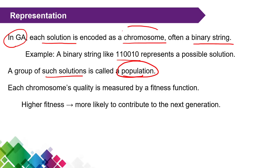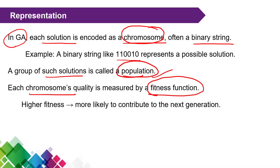A group of such solutions is called a population. So the first key term is chromosome — the representation of a solution — and a set of such chromosomes is called the population.